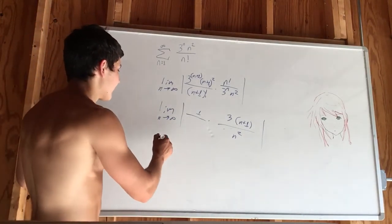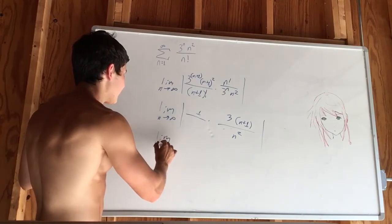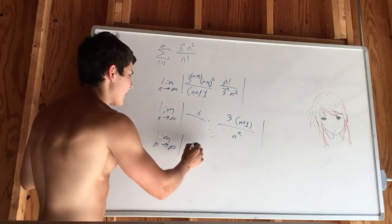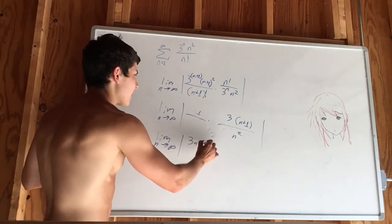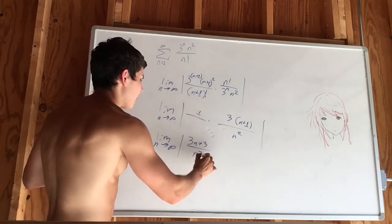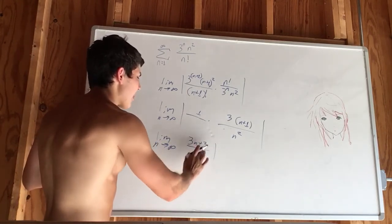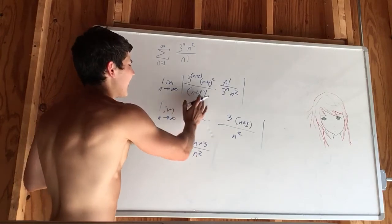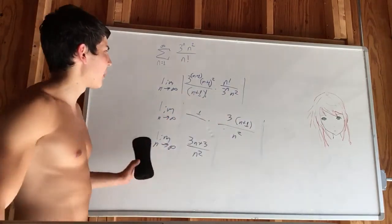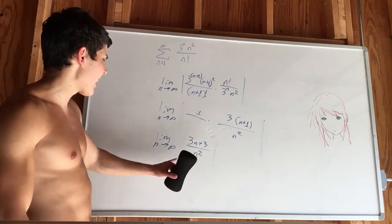So now I think that's it. We take the limit as n approaches infinity of the absolute value of 3n plus 3 over n squared. We can remove the absolute value at this point because we know that everything was positive, so we can just get rid of that.